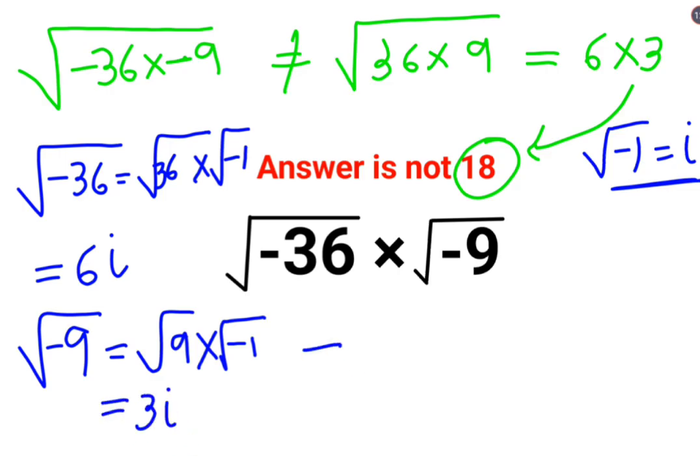So now the answer comes out to be what? 6i multiplied by 3i. So 6 into 3 is 18, i into i is basically i square.